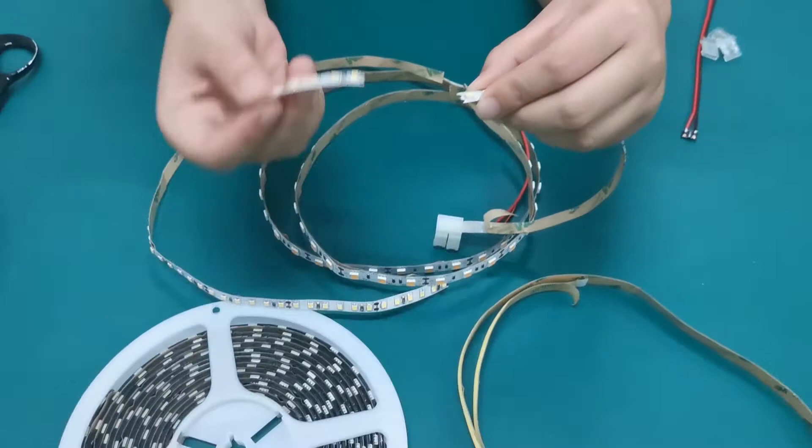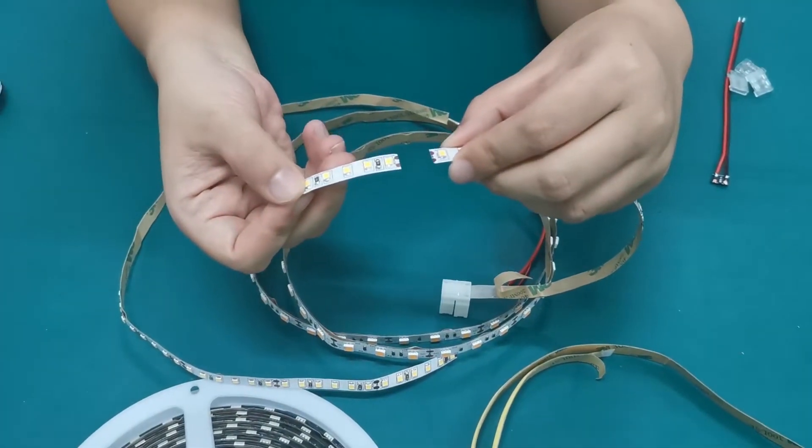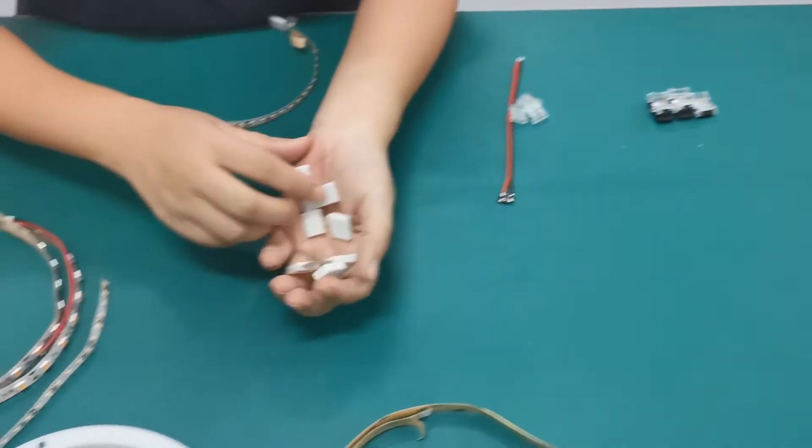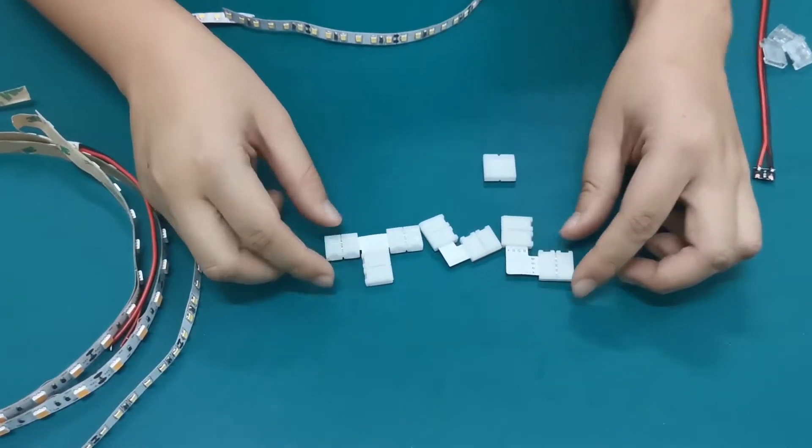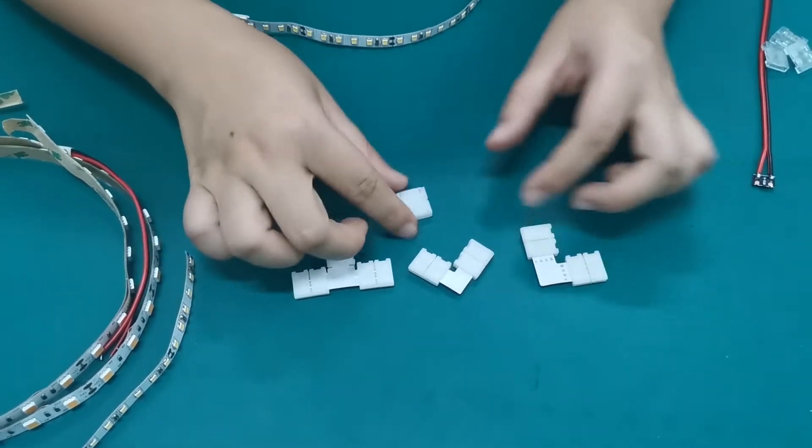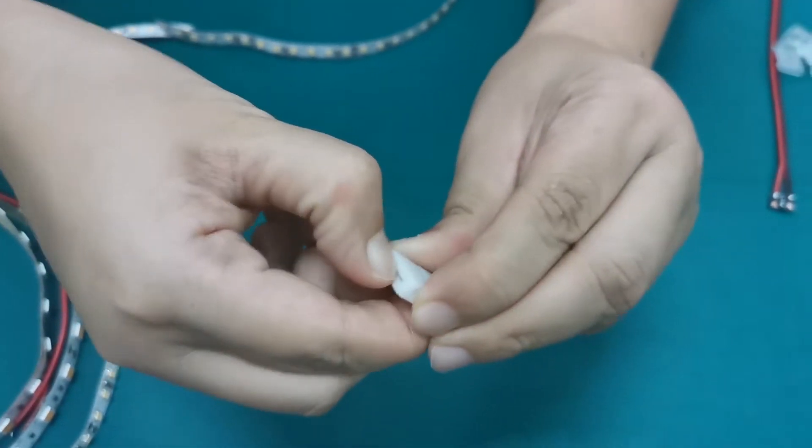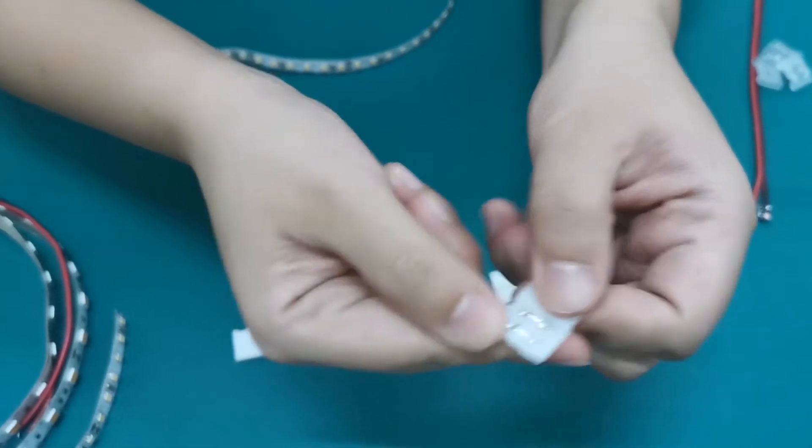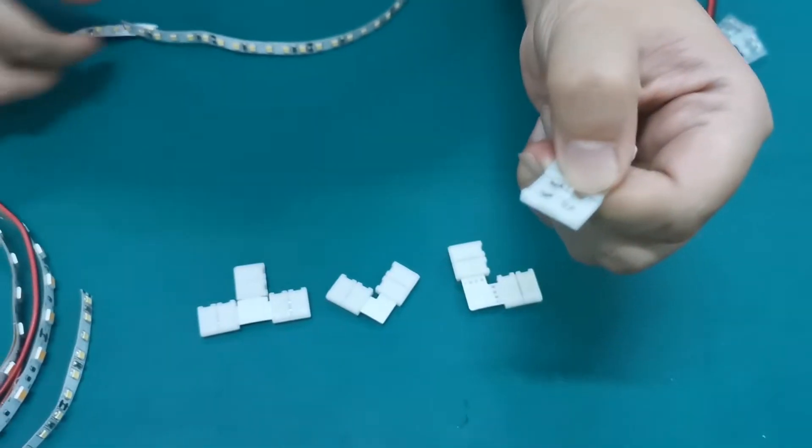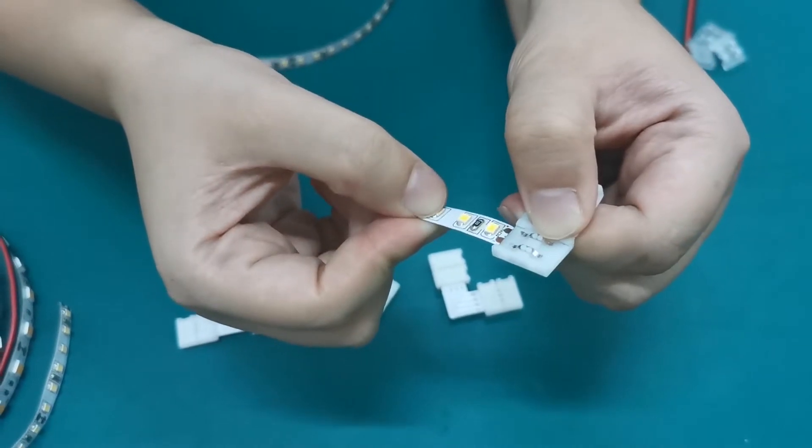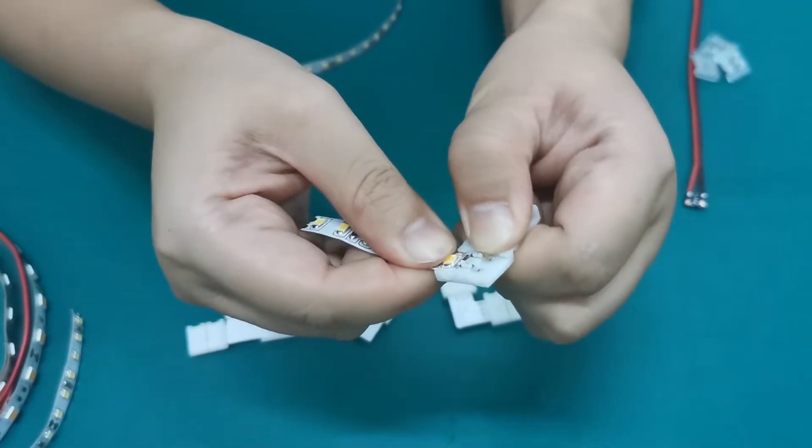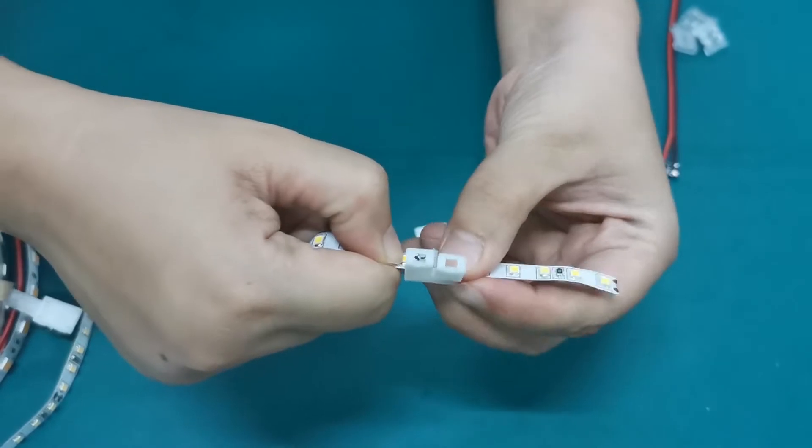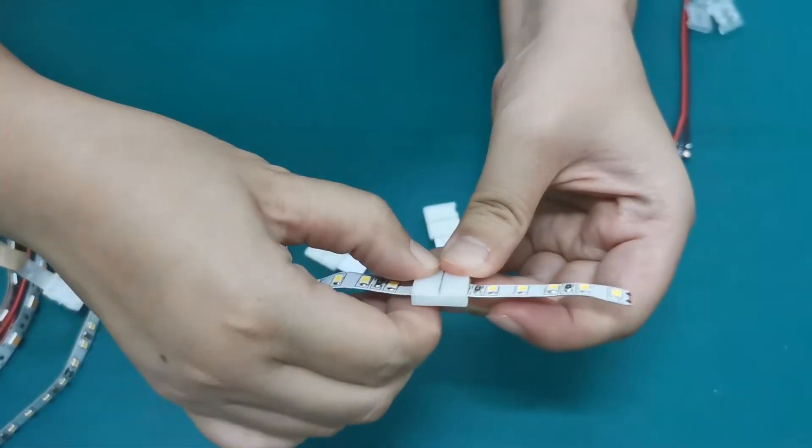So after you cut it, maybe you want to connect it together. We have another one. This one has some easy connectors. This no need soldering. Here have some types and you can see this one. Here have two pins and you only put this strip inside. See? And another type, another side inside. Then put it together.